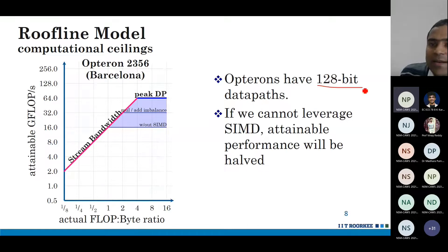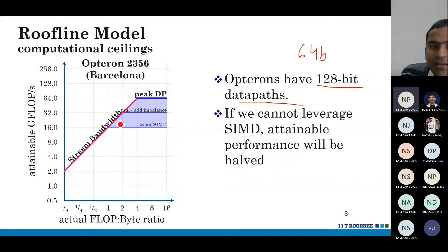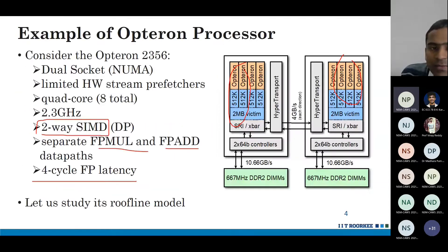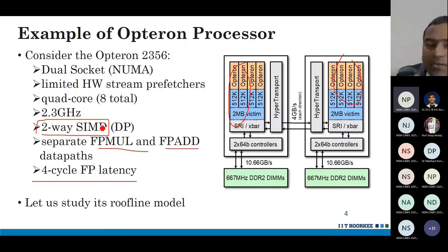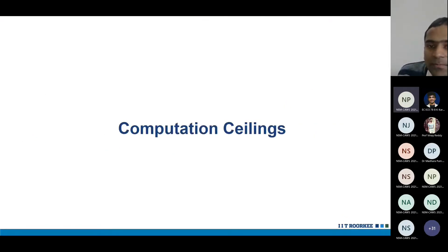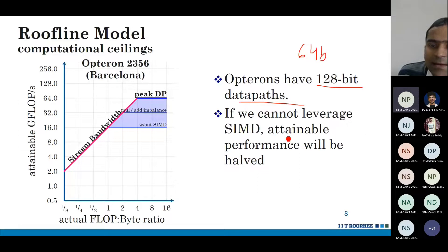Opterons have a 128-bit data path. Double precision is 64-bit, and it is two-way SIMD — the total width is 128 bits and each operand is 64 bits. So if we cannot leverage SIMD, then the attainable performance will decrease even further.